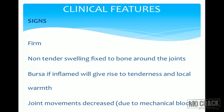On examination, osteochondroma presents as a firm swelling around the joint that is not easily moveable. If the bursa is inflamed, it gives rise to tenderness, local warmth, and restricted joint movements. There is an outgrowth from the metaphysis.